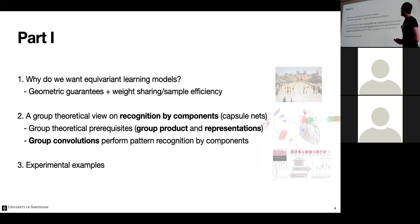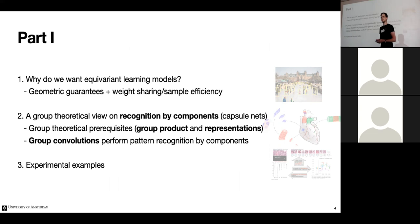Let's start by discussing why we want group equivariant models, approaching it from a recognition-by-components viewpoint, and then move to some experimental examples. Please interrupt me if you have any questions — I want to make sure we're on the same page.